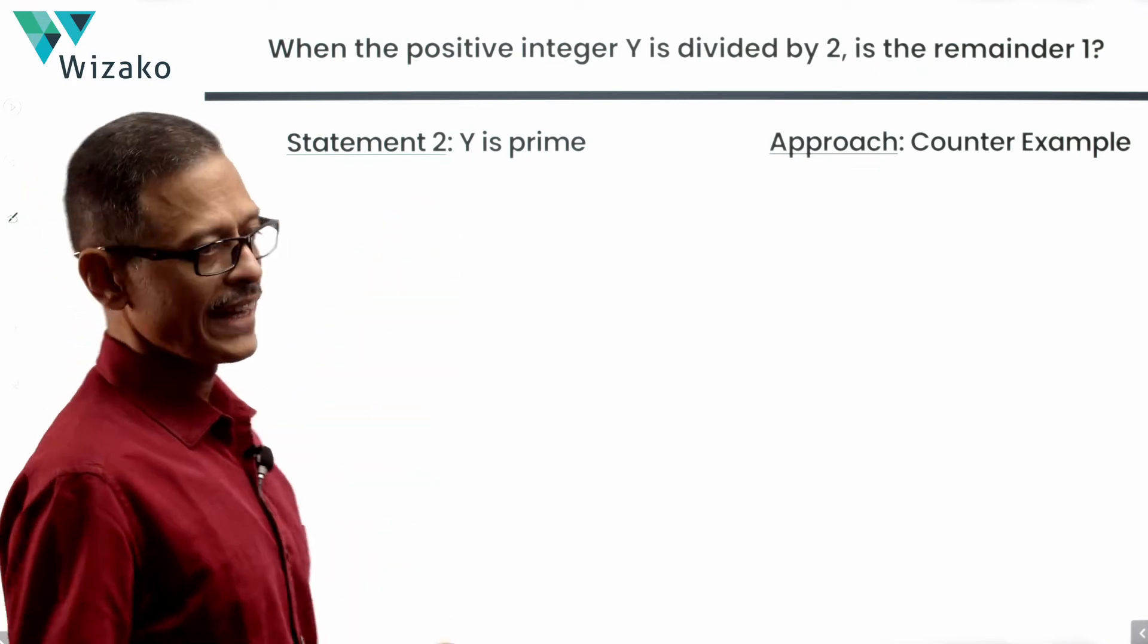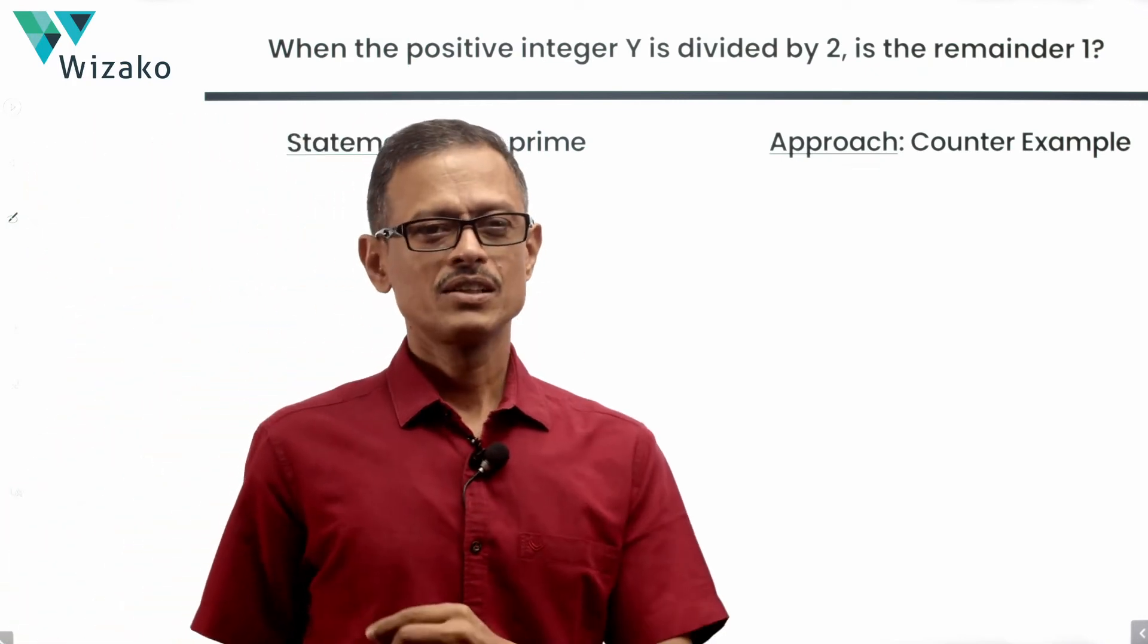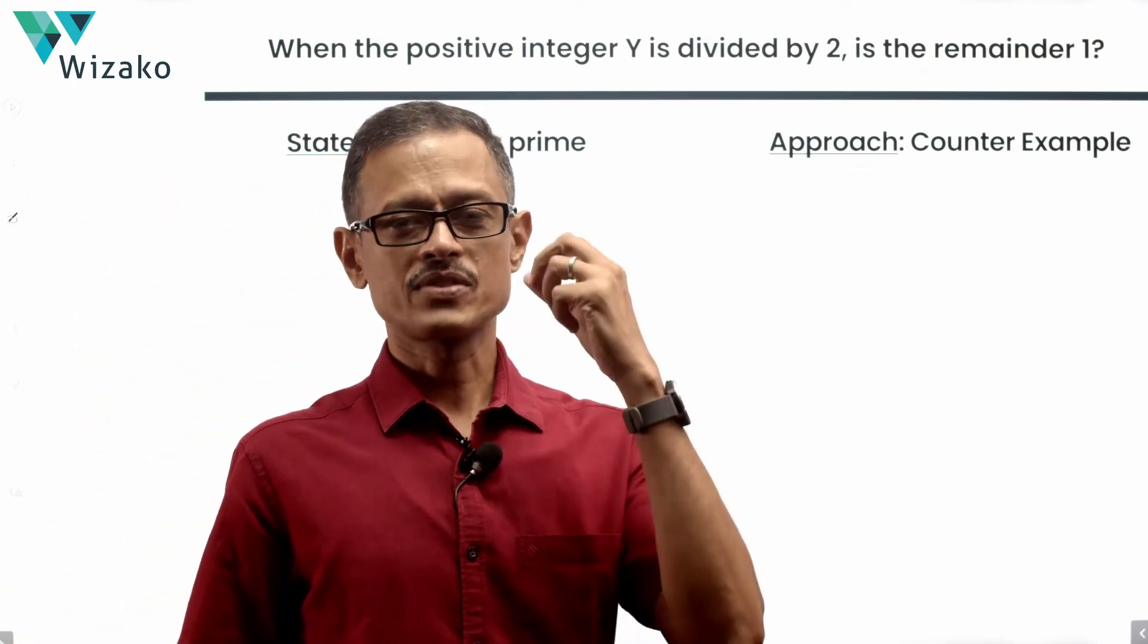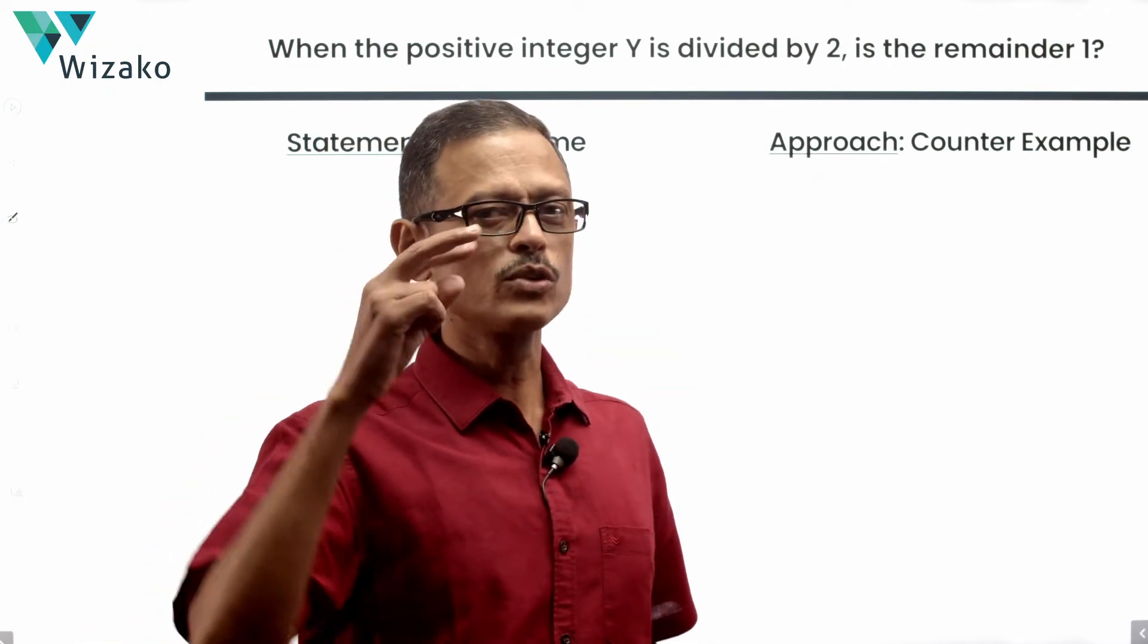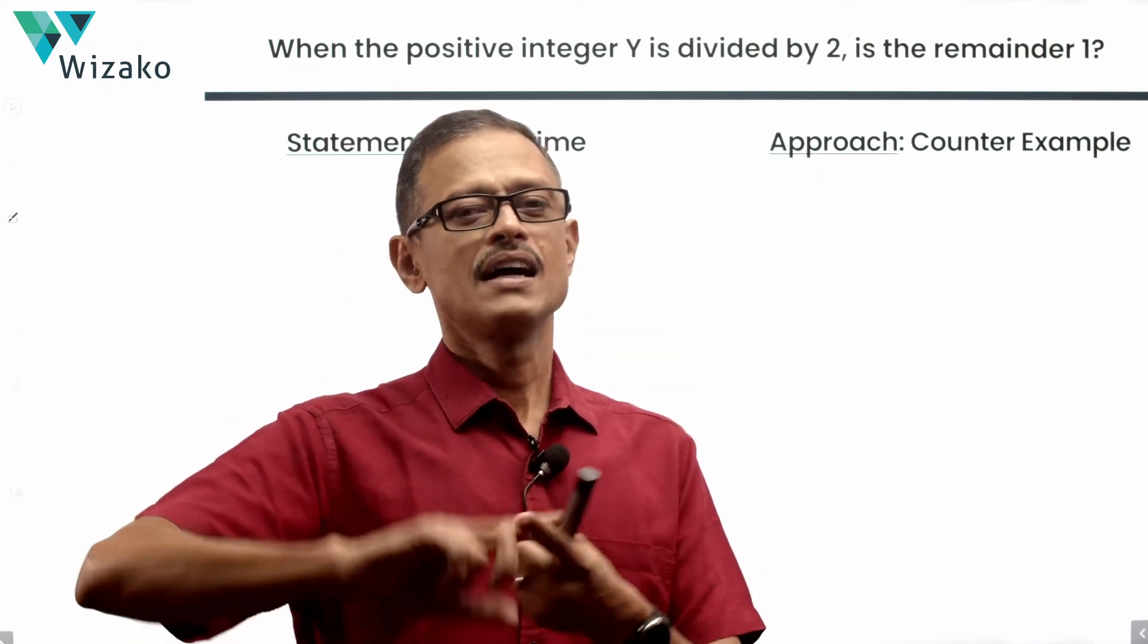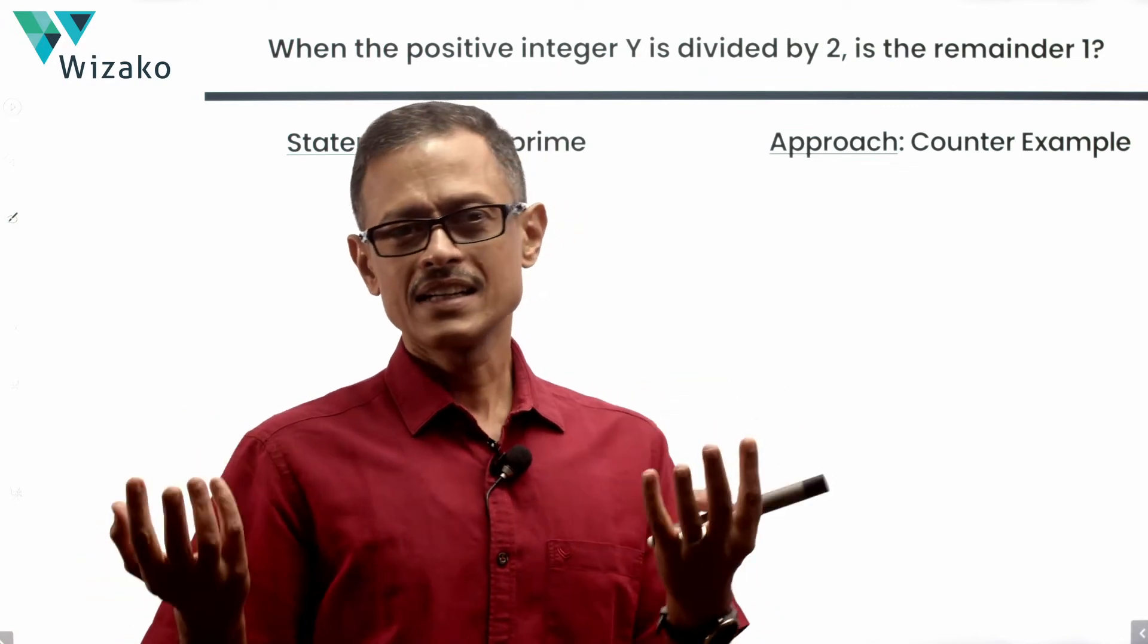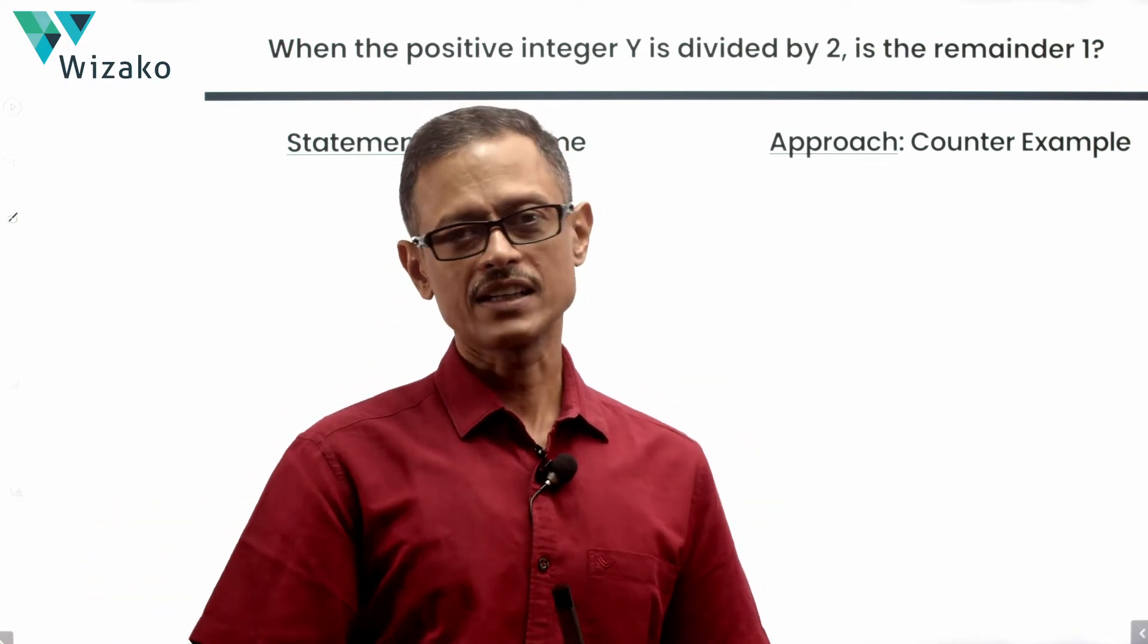Take a look at statement 2 alone. See whether that's going to help us. It says Y is prime. Watch out. You know that prime numbers are numbers which are subsets of positive integers, subsets of natural numbers. They have exactly two factors: one is the number and the other is 1. Essentially, we know that even numbers will have 2 also as additional factors.